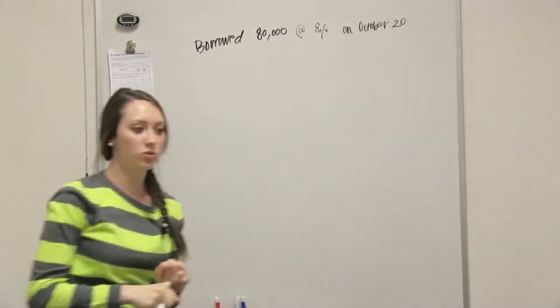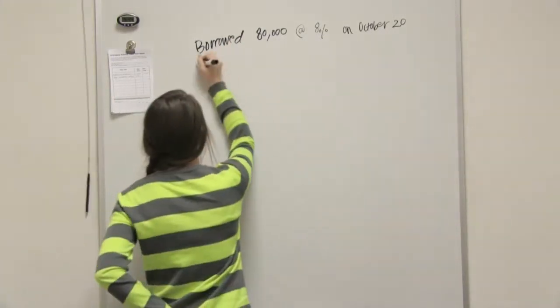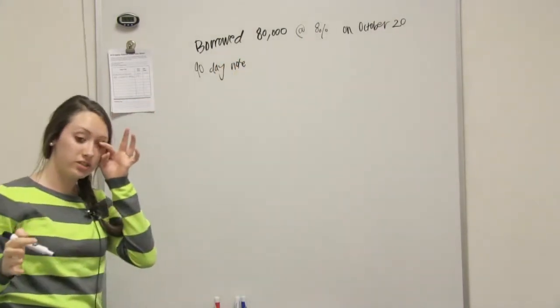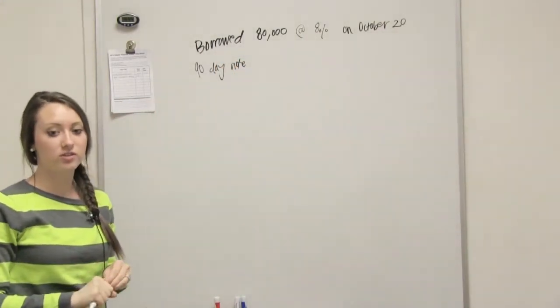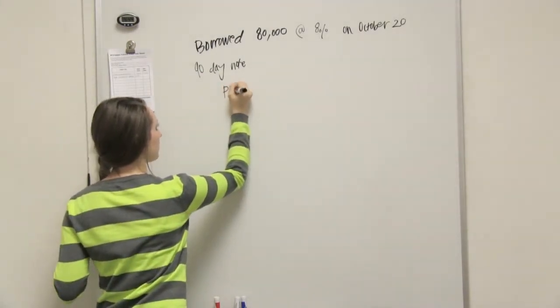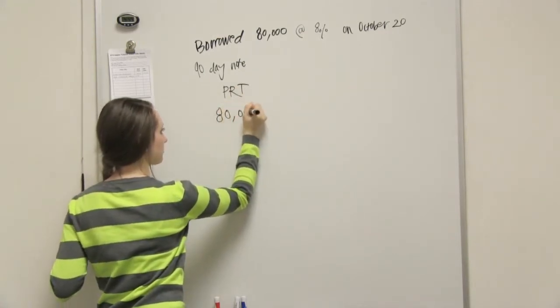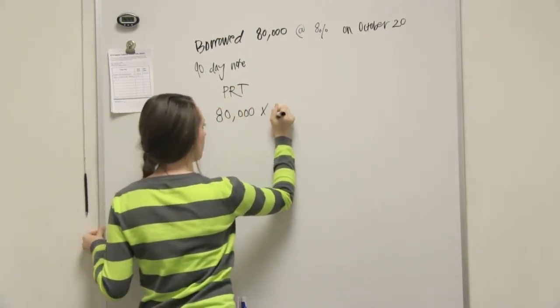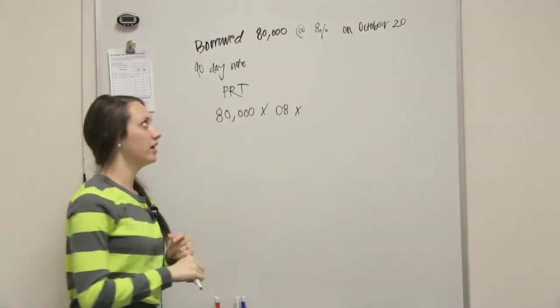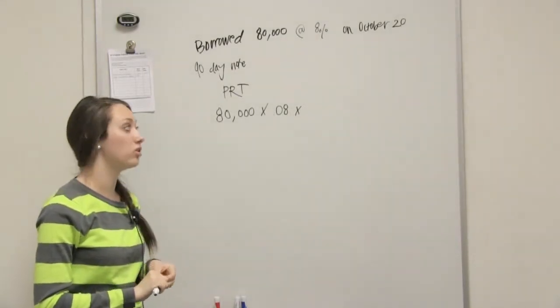So to record the accrual of interest on December 31st, we'll do the principal times the rate times the time, so we'll do 80,000 times the 8%, and then we'll have to count the days that we've had the loan.